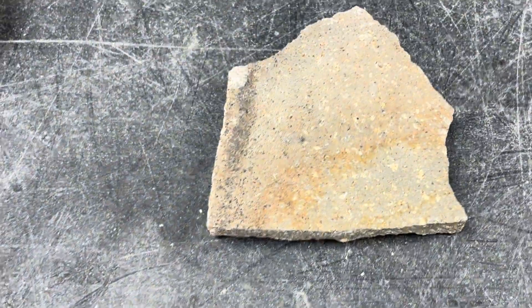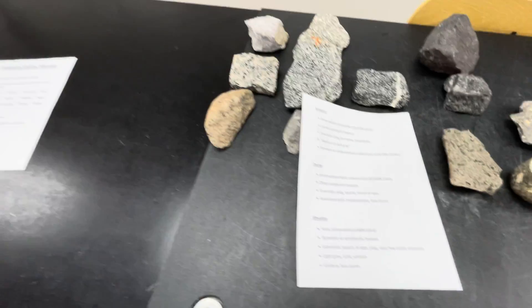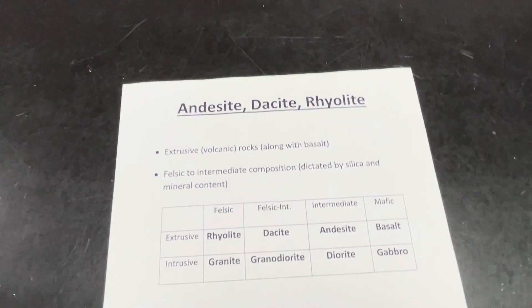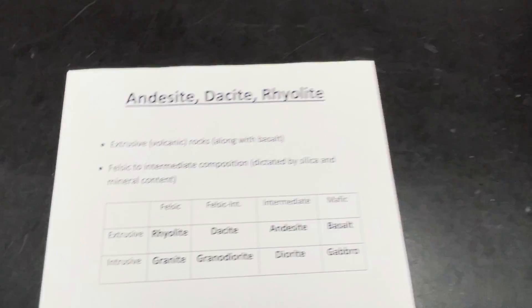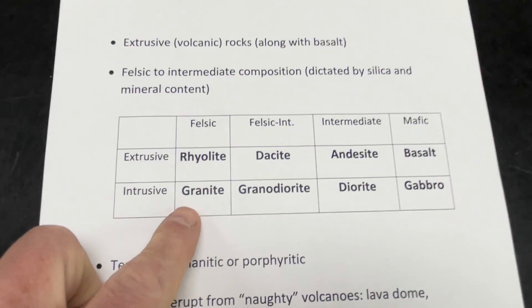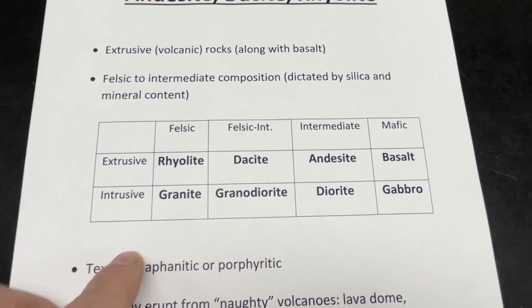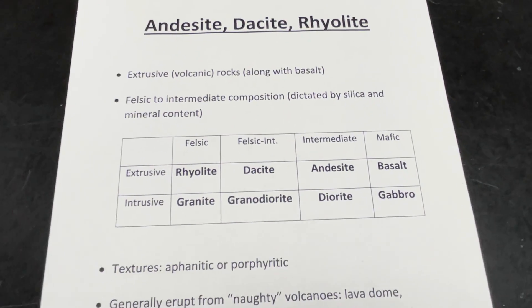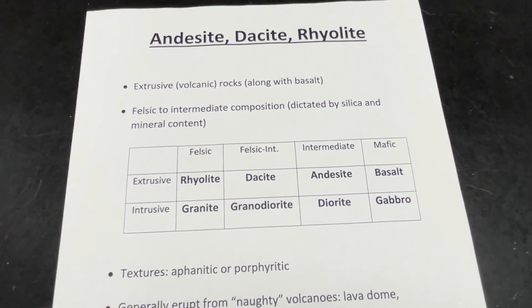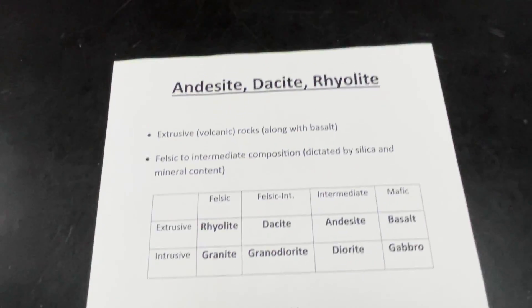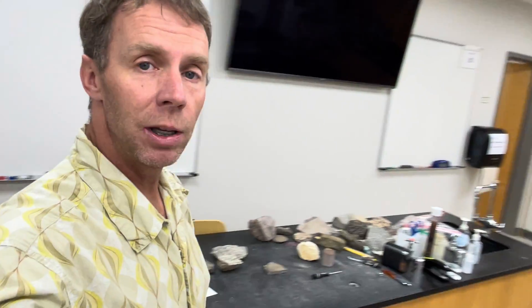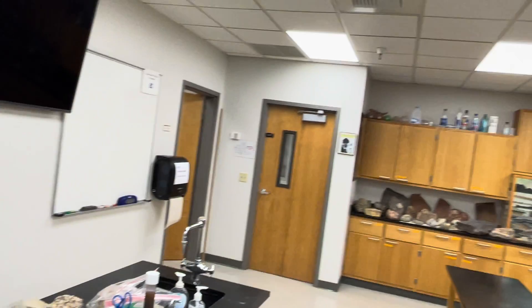So there we go — andesite, dacite, rhyolite. We've covered all eight rocks on the igneous rock table. Next time we'll focus on pumice, tuff, and obsidian, which will wrap up and conclude our igneous rock series, and then we'll turn our attention to sedimentary rocks. Thanks for joining me here with Rocks with Wilsey from the College of Southern Idaho.